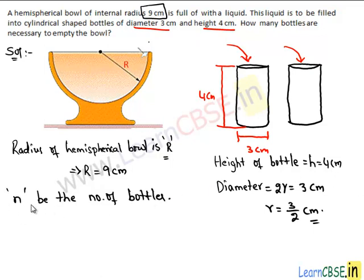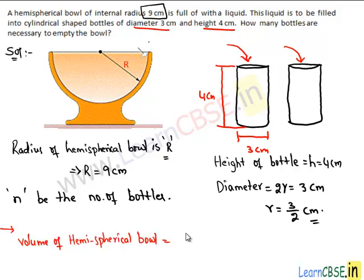To find the value of n, we must think about what equation will give the value of n. To empty the ball, the volume of the liquid in the hemispherical ball must equal the total volume in the n bottles. So: volume of hemispherical ball = n × volume of each cylindrical bottle.